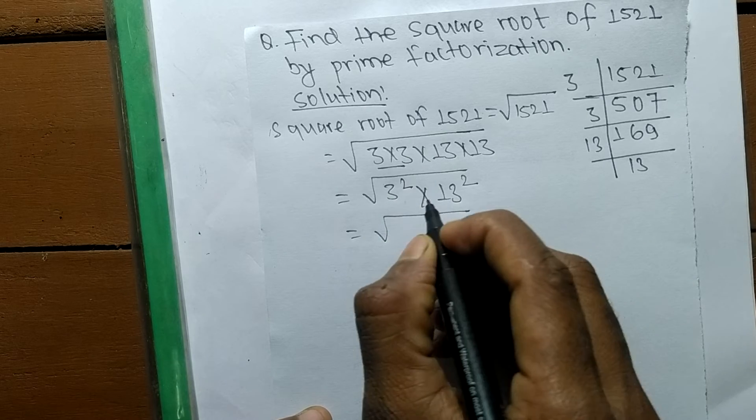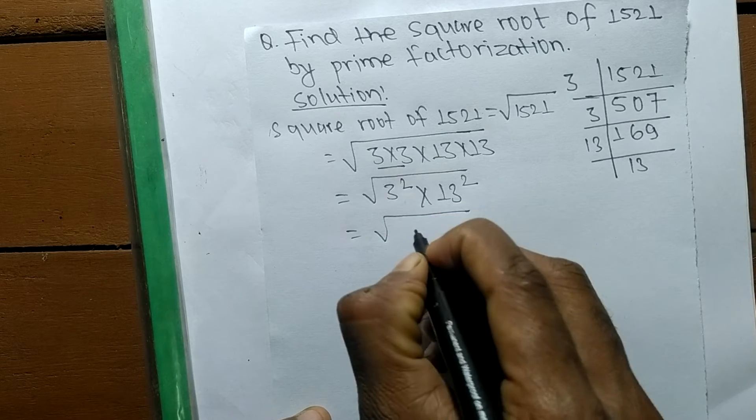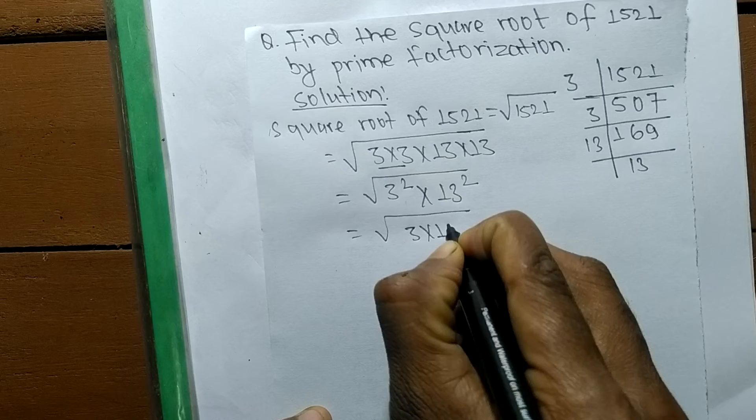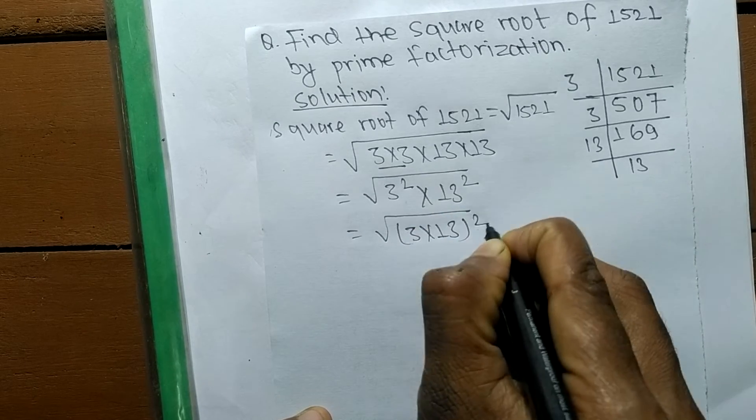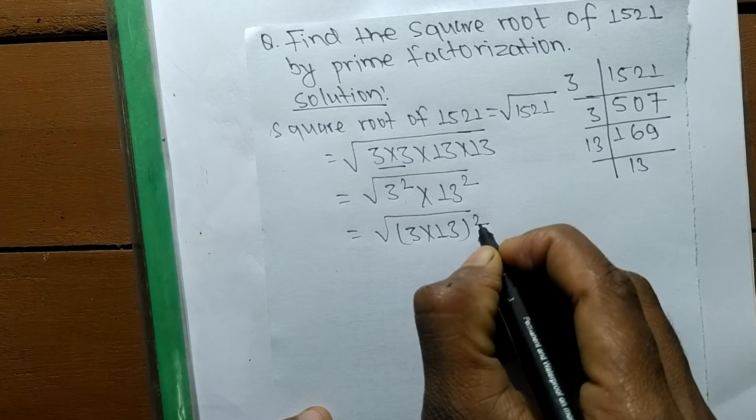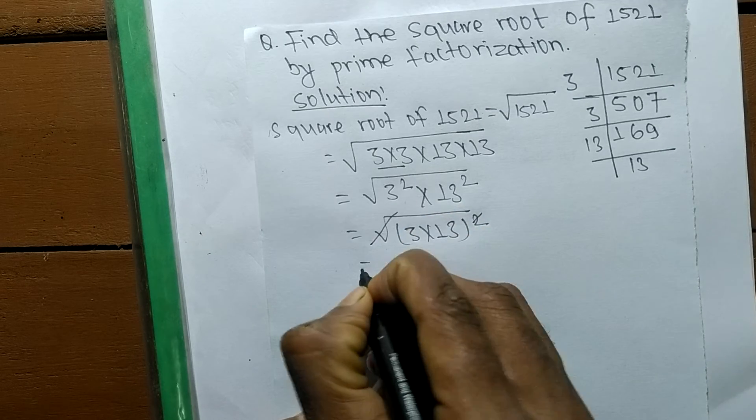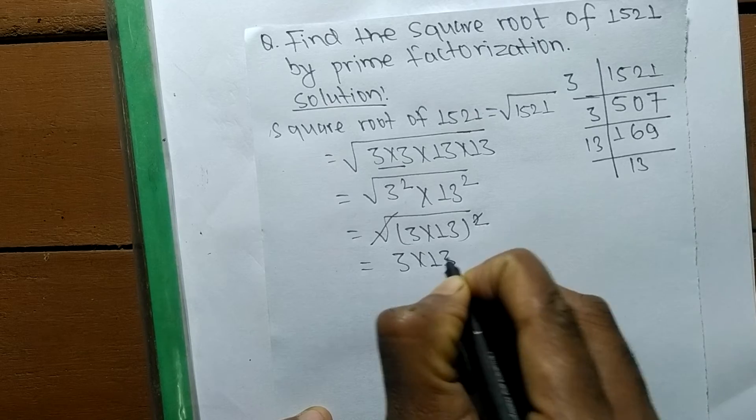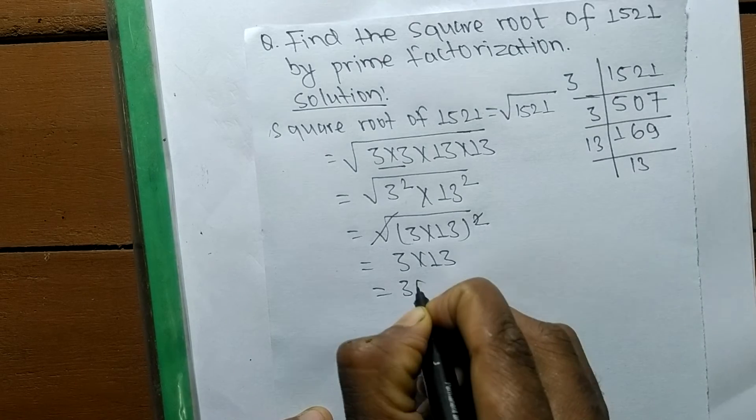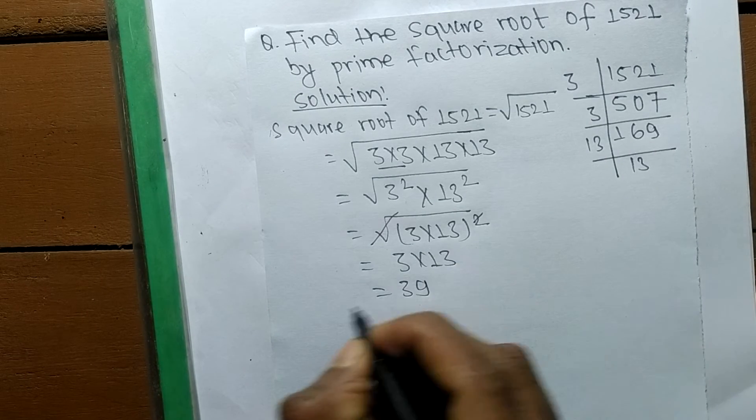As you look closely, these both numbers contain a square, so we can write 3 times 13 whole squared. We have taken a square as a common. So a square and a square root cancel each other, so it is 3 times 13, which is equal to 39.